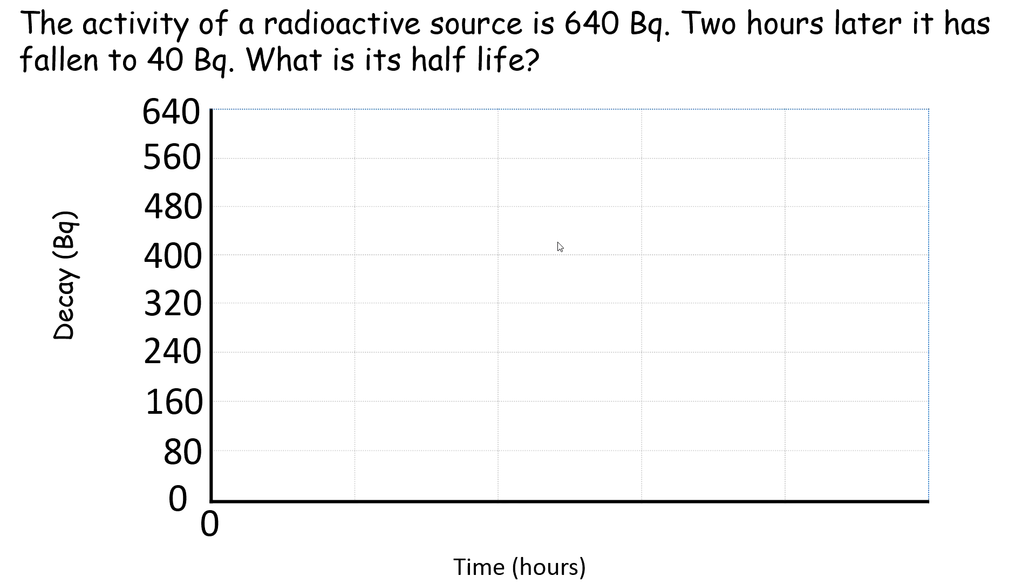Next example: the activity of a radioactive source is 640 becquerels. Two hours later it has fallen to 40 becquerels. What is its half-life? So it's 640 at the start. In one half-life it would half. In two half-lives it would half again and quarter. In three half-lives it would quarter again and we're down to 80. So we've gone 640 to 320 to 160 to 80, and then four half-lives again to half again, giving us what the question stated originally as 40 becquerels. So it's taken two hours to do four half-lives.